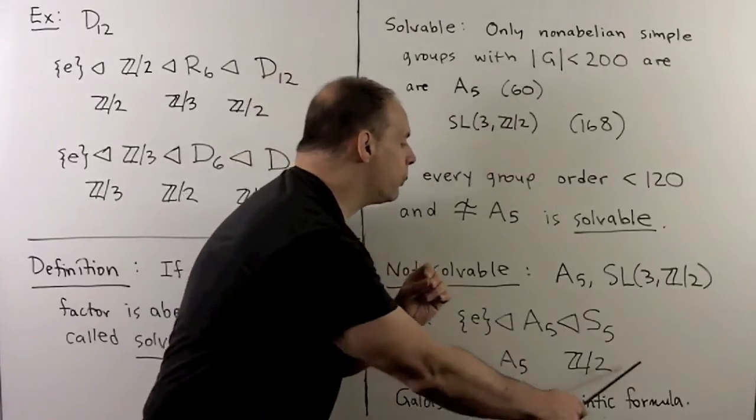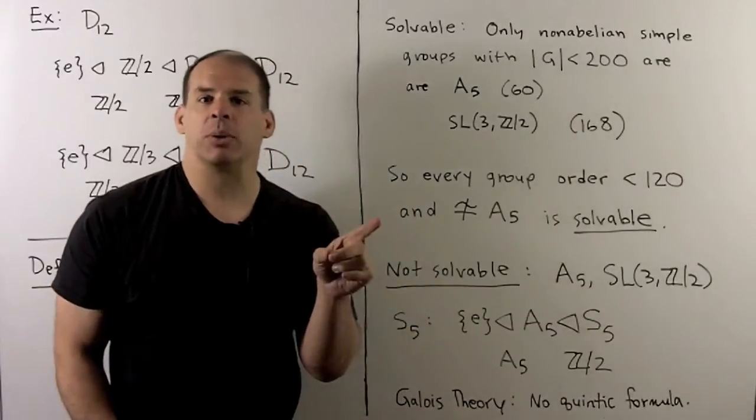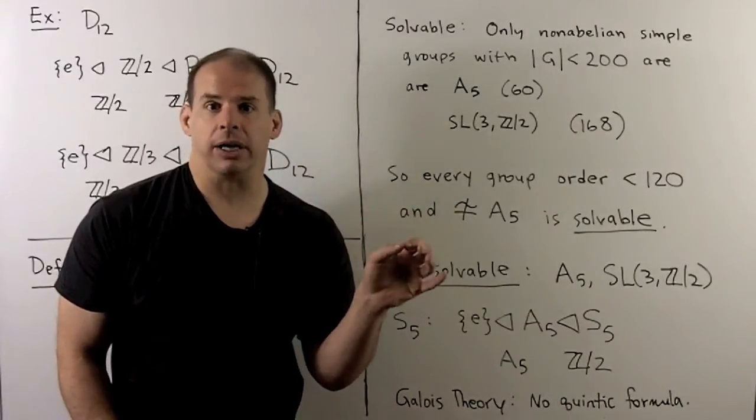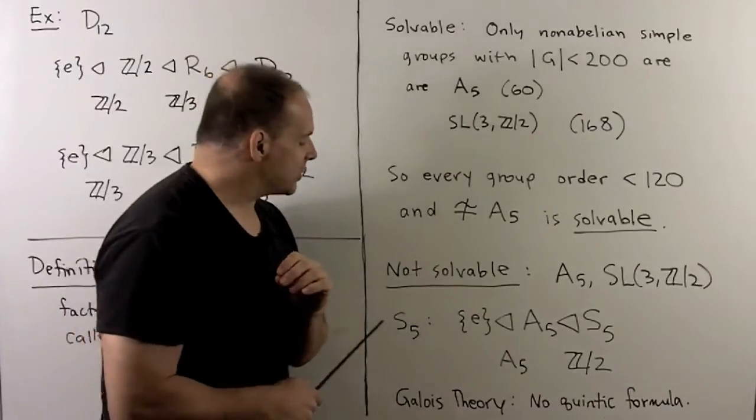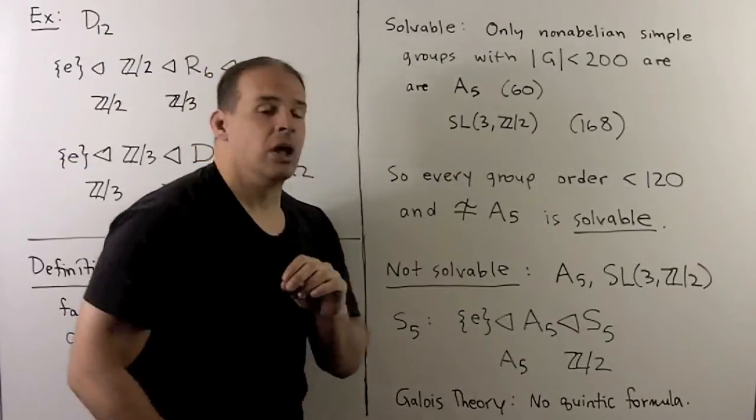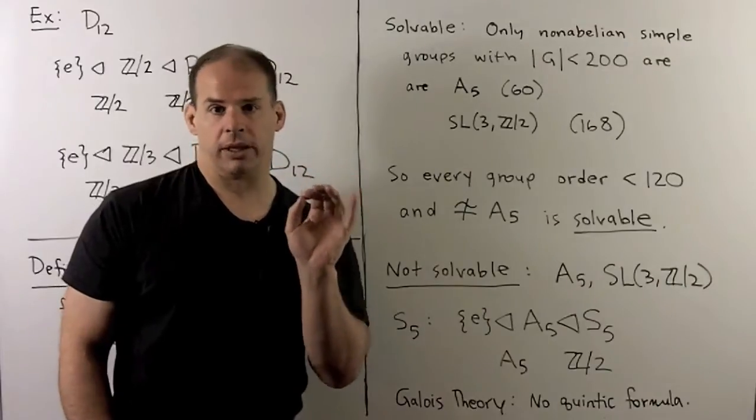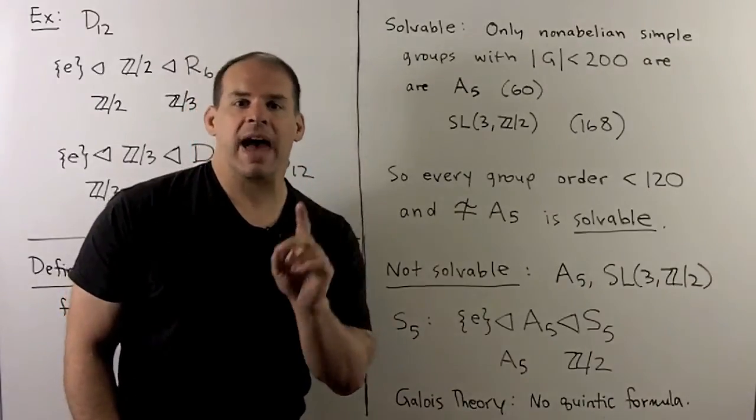Now, this becomes more important in abstract algebra when we get to Galois theory. So what's going to come out of here is that because S5 is not solvable, there will be no quintic formula.